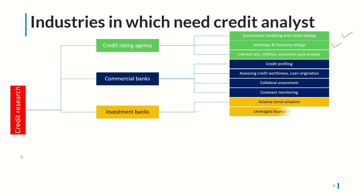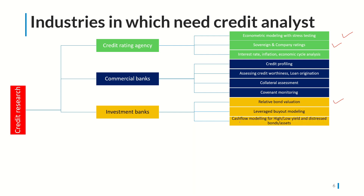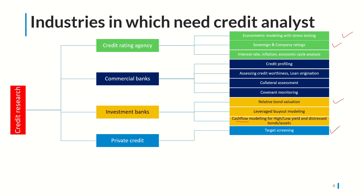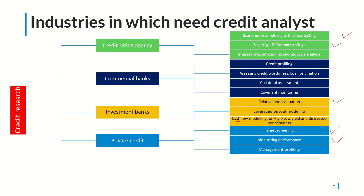In investment banking, credit analysts do relative valuations of bonds and prepare LBO models. When an LBO model is prepared, many tranches of debt are used to finance the deal and you have to model cash flows very carefully. Investment banks also need credit analysts for cash flow modeling of high-yield, low-yield, and distressed bonds and assets. For private credit — directly giving loans to individuals — you need to do screening for loan eligibility. Many fintech apps like CreditBee do this type of work. You also monitor company performance, checking whether sufficient cash flows are being generated and doing management profiling for transparency about credit commitments.